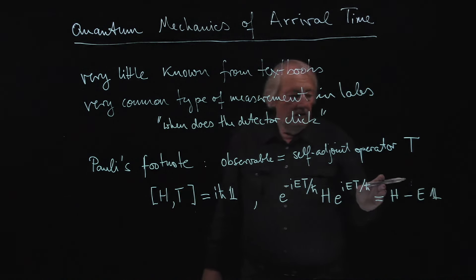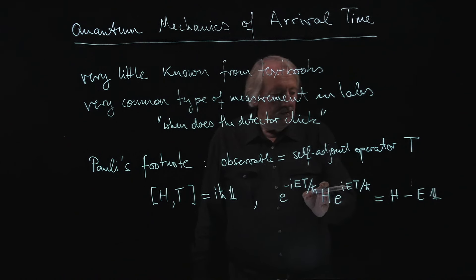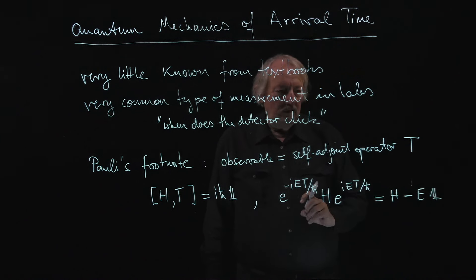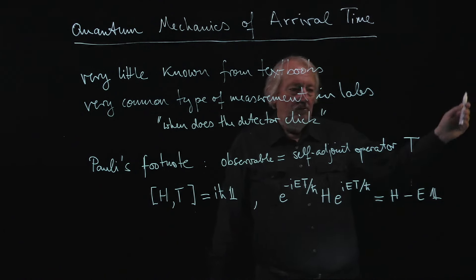So now, if we have any eigenvalue of H, then also every shifted value has to be an eigenvalue, because that's a unitarily equivalent operator, or any point in the spectrum already immediately spreads to the whole line.